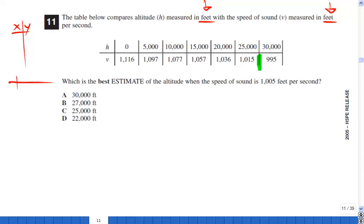And the question is, which one should be the best altitude? Now we know that at 30,000 feet the estimate is 995, and at 25,000 feet the estimate of the speed of sound is 1015. I'm looking for 1005, which is here, between those two.